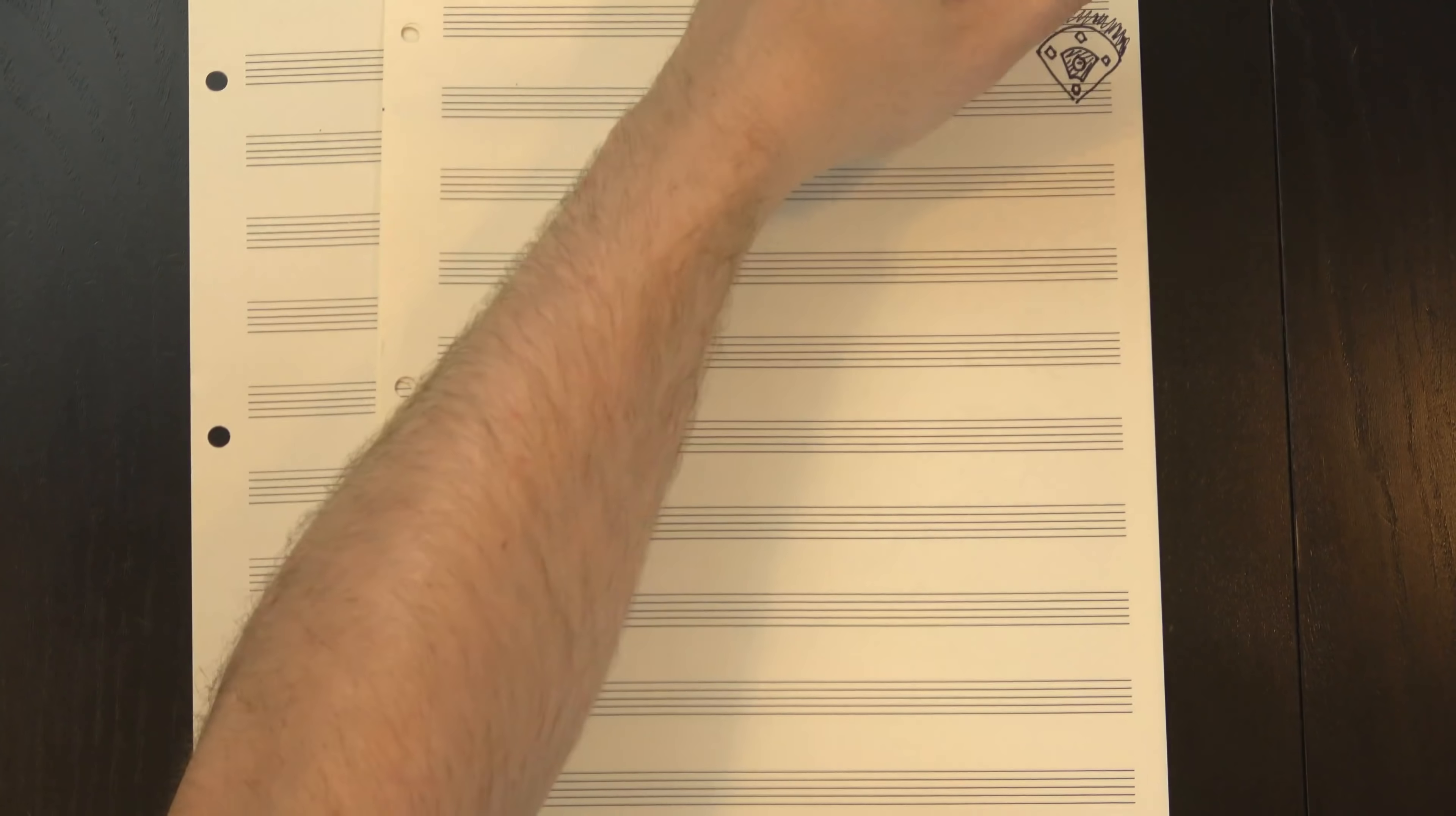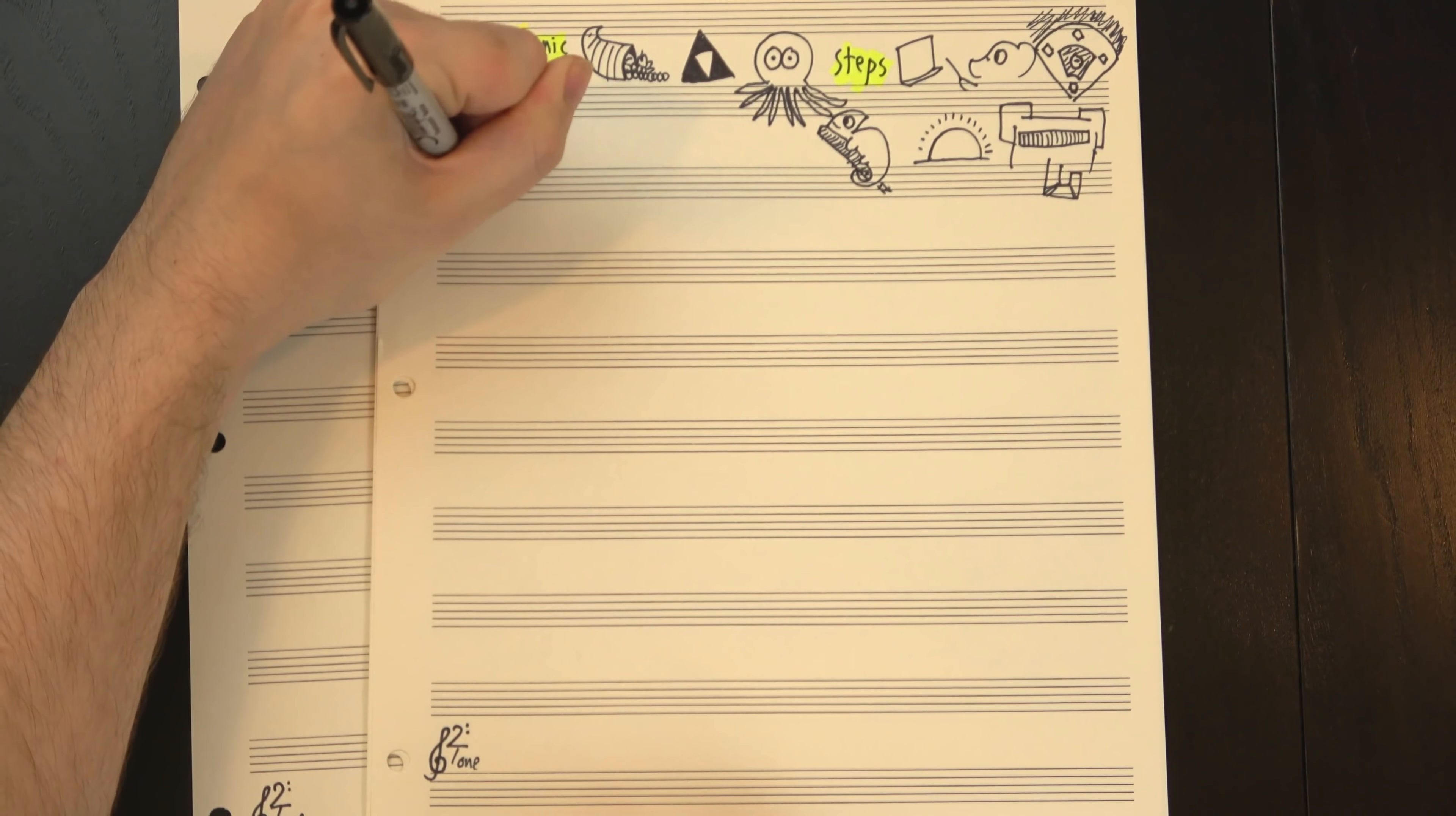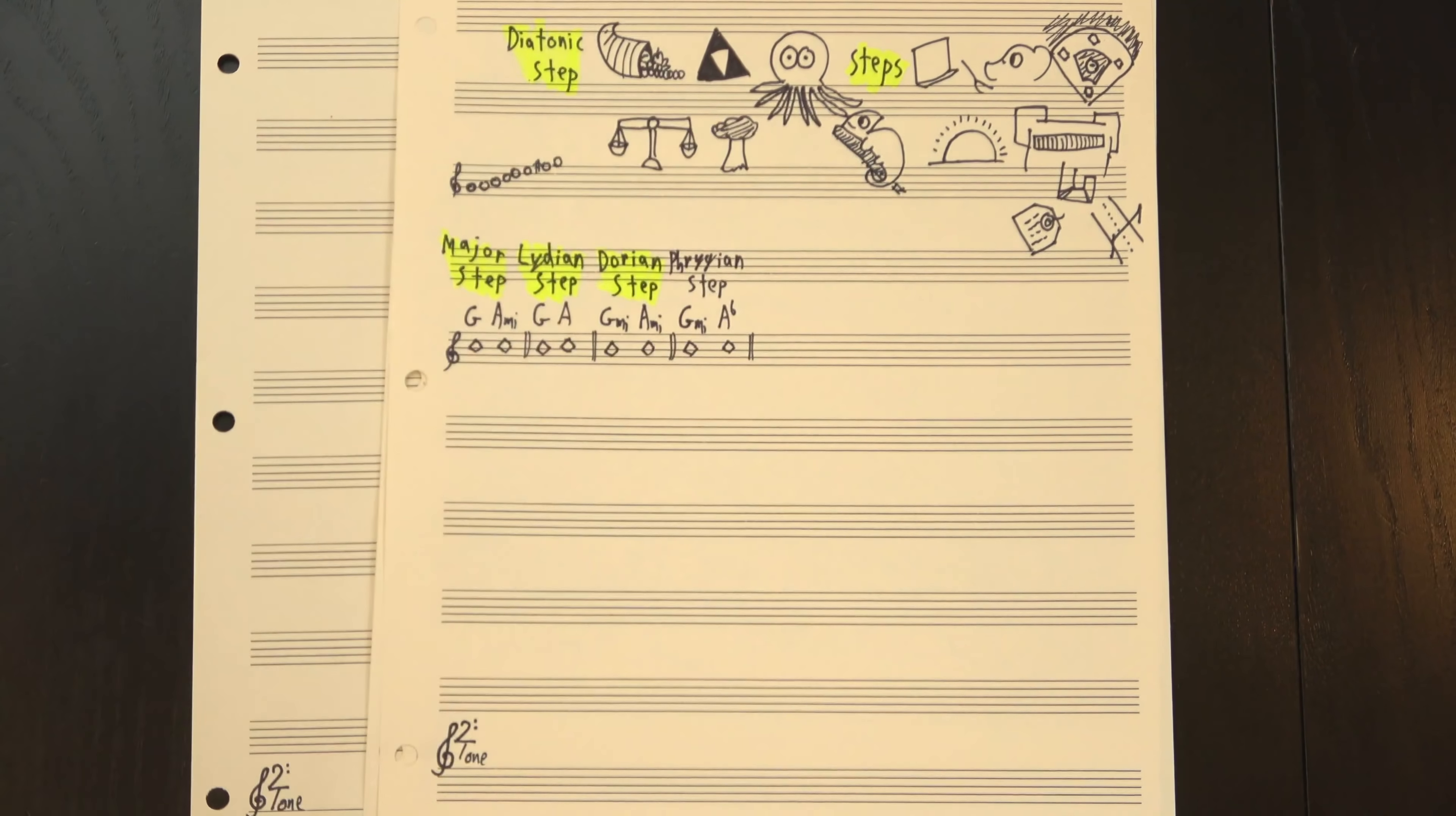We're in the homestretch. We've done fifths, tritones, thirds, and unison, so all that's left is motion by step. There's eight of these, which I'll break up into three categories. The first and most numerous are the diatonic steps. Here, I'll use a slightly more technical definition of diatonic - these are steps that appear somewhere in the major scale. I'm gonna name them based on the mode they most strongly imply. A mode is just a scale that uses all the same notes as major but with a different root. As such, G major to A minor is the major step, G major to A major is the Lydian step, G major to F major is the Mixolydian step, G minor to F major is the Dorian step, and G minor to Ab major is the Phrygian step.